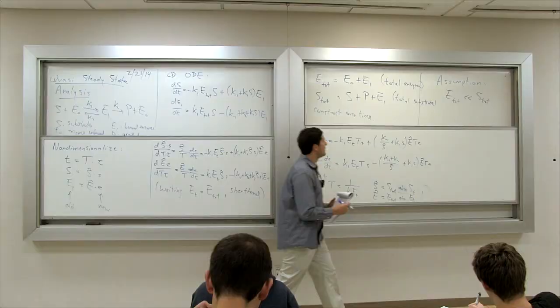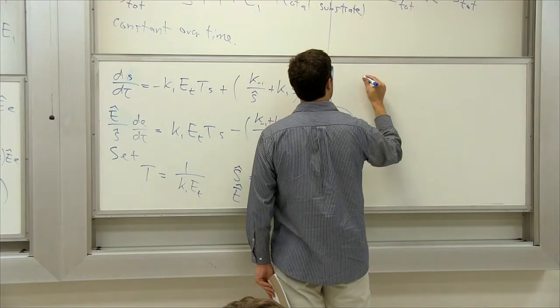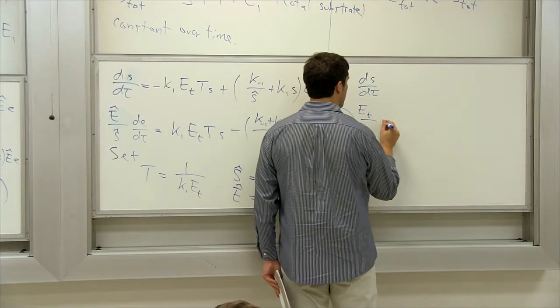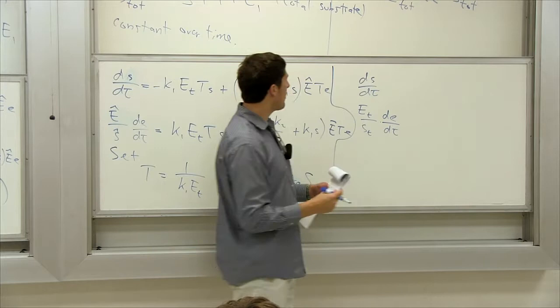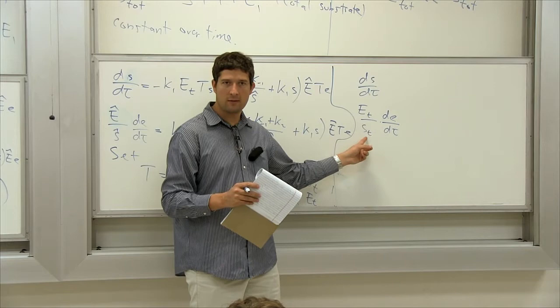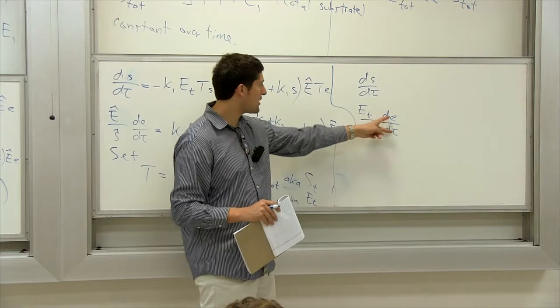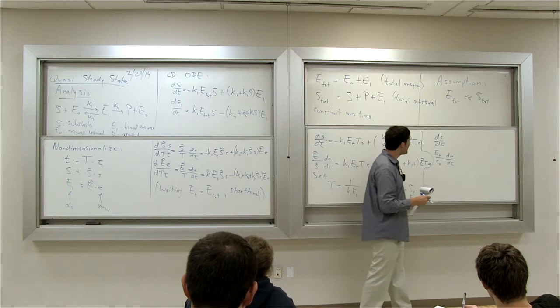Now the left side of the second equation becomes (E_tot/S_tot)·dE/dtau. Remember what we said about E_tot divided by S_tot? E_tot is much smaller, so this thing is very small — that's our epsilon. That's right. That's the epsilon from time scale decomposition — this derivative is multiplied by a very tiny number.